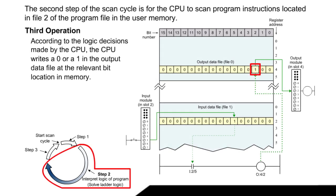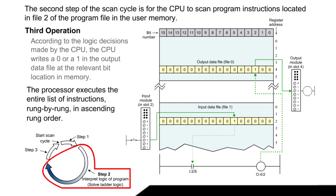The third operation: According to the logic decisions made by the CPU, the CPU writes a 0 or a 1 in the output data file at the relevant bit location in memory. The processor executes the entire list of instructions rung by rung in ascending rung order.